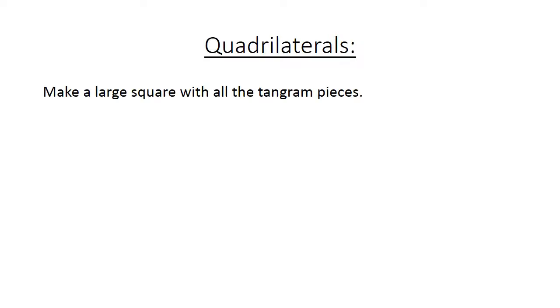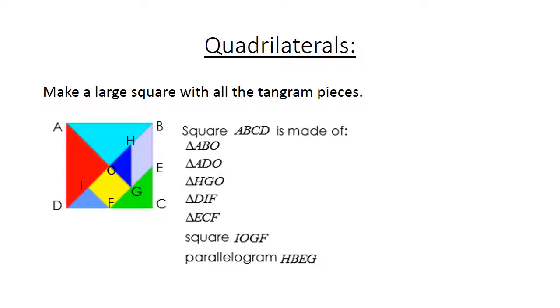Make a large square with all the tangram pieces. We have square ABCD, which is made of triangle ABO, my turquoise one.